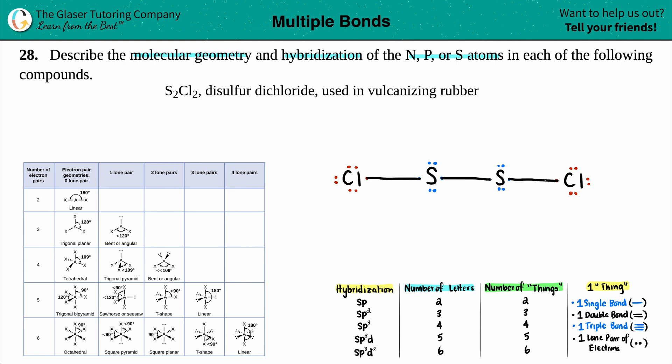Now since we have a visual representation, we can easily find the molecular geometry. In this case we only care about the sulfur. They look exactly alike to me, so it doesn't really matter which one you talk about. Maybe we'll do this one.